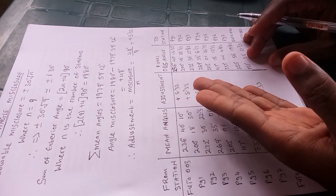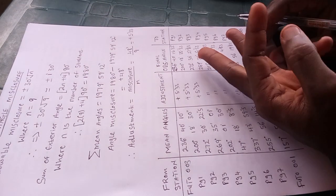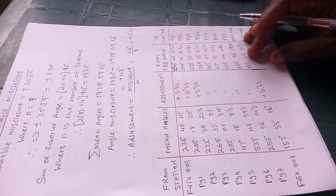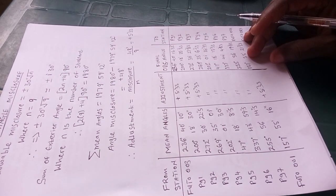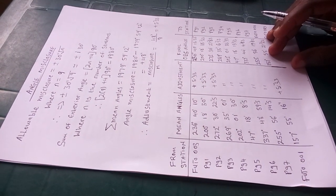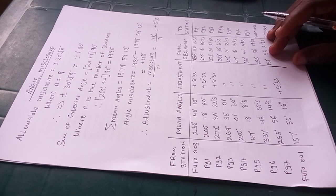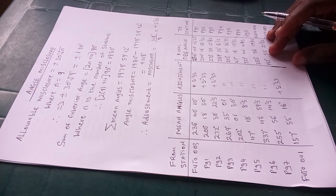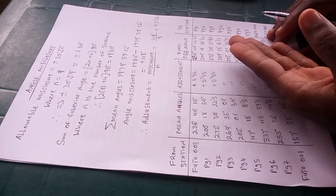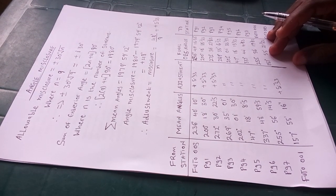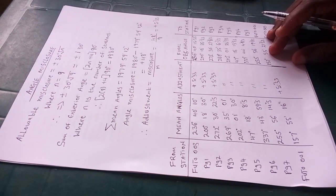The same thing is done for the rest of the stations to have their final observed angles. That is the end of this video. In the next series you will find out how to do the forward computation sheet — how to use these final observed angles to obtain our coordinates. Thank you for watching. Don't forget to hit the subscribe icon, invite your friends, and keep growing. See you again.